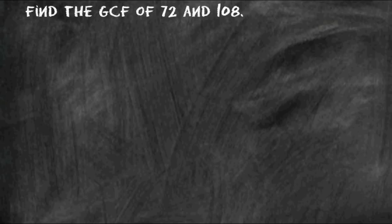Let's try another example. This time we are going to figure out what the greatest common factor is of 72 and 108. So first, we must write the two numbers right next to each other.